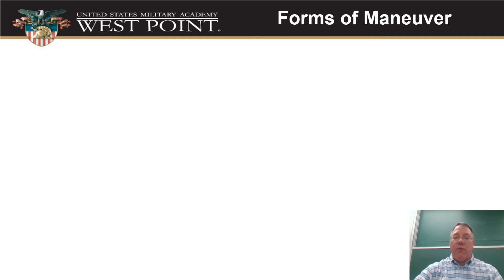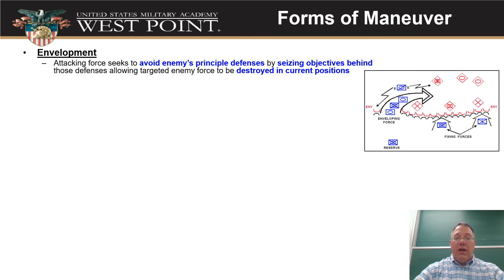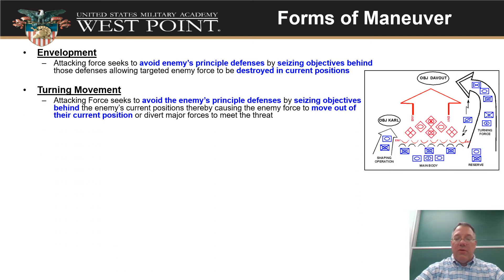There are several forms of maneuver for the attack. Envelopment involves sending a small fixing force to keep the enemy distracted while an enveloping force goes around the flank. A turning movement aims to kill the enemy somewhere else — we pressure them or send a force behind them to pull them out of their defensive positions so we can fight on terrain we choose.